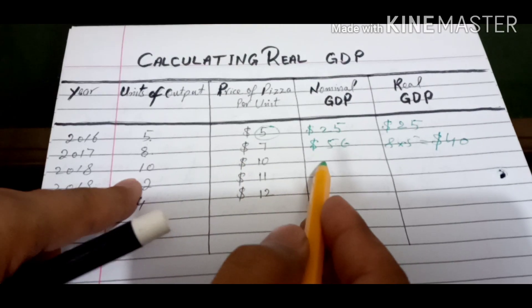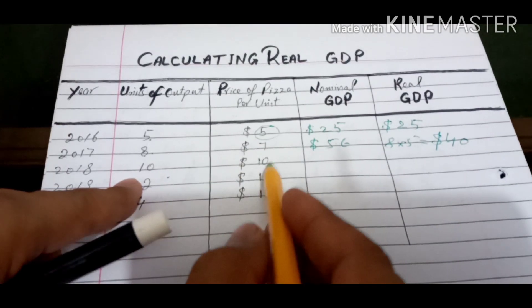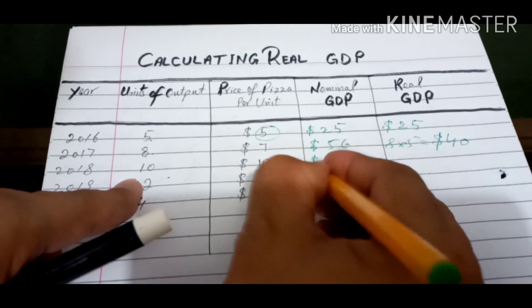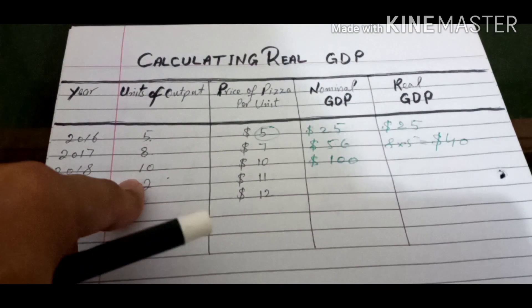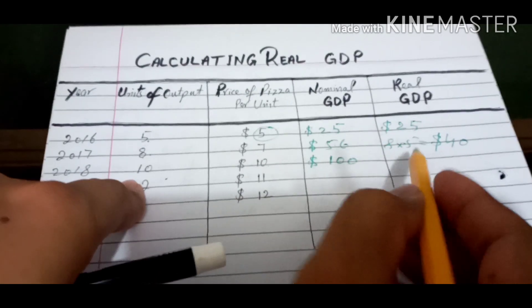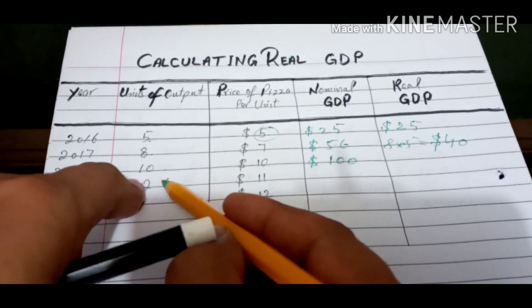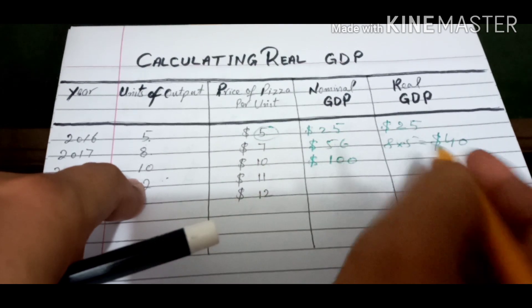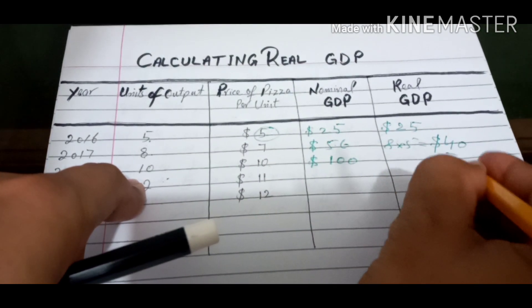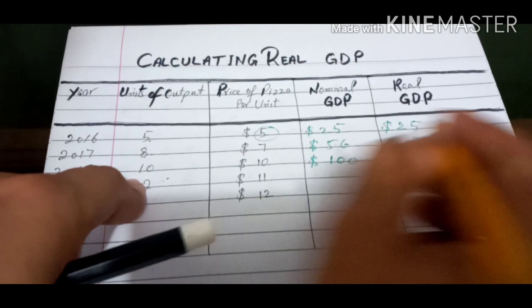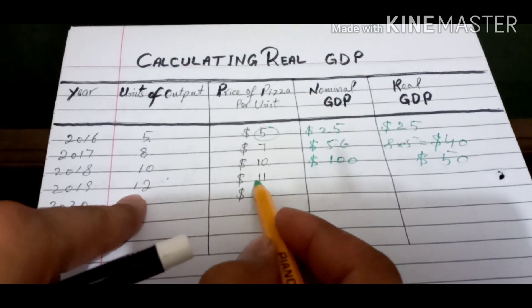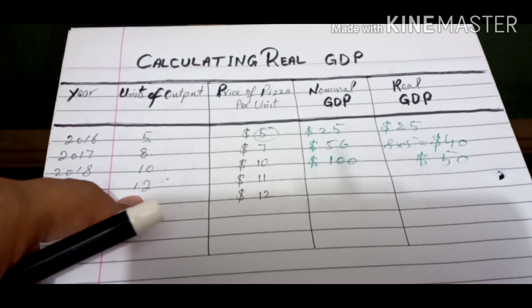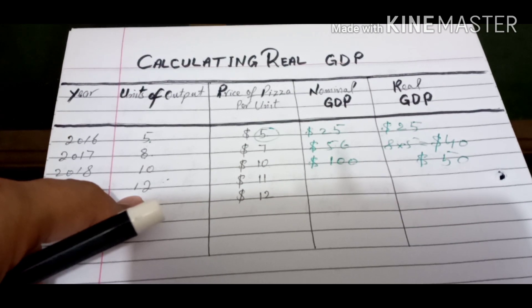And then if we multiply 12 with 11, it will give us a result of $132.